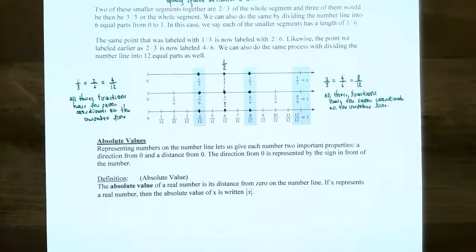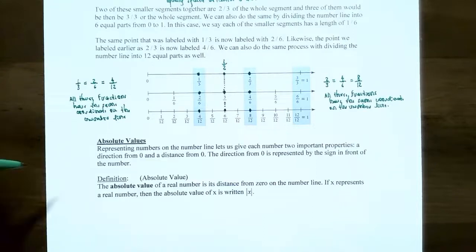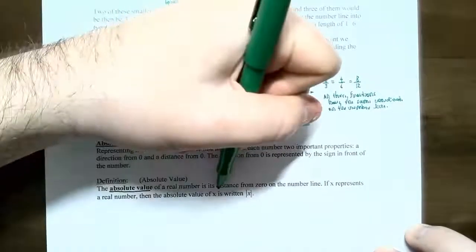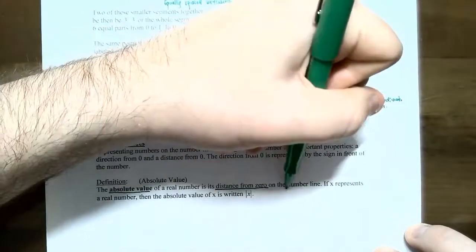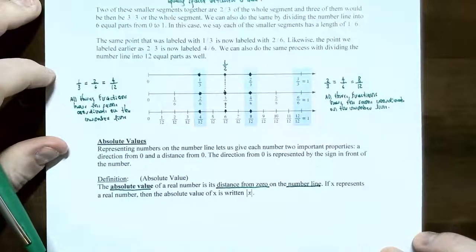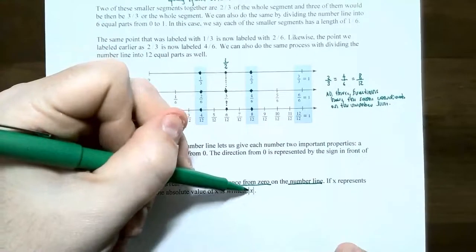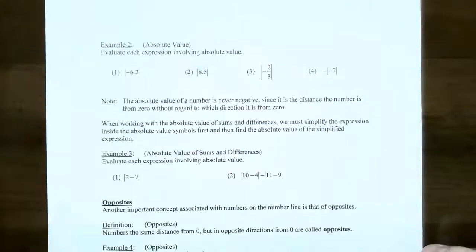Let's move on to absolute value. Absolute value means distance from the origin. If you see absolute value symbols, it just means: what is the distance of that number from the origin? The absolute value of a real number is the distance from 0 on a number line. If x is a real number, the absolute value of x is represented with vertical bars around the number.